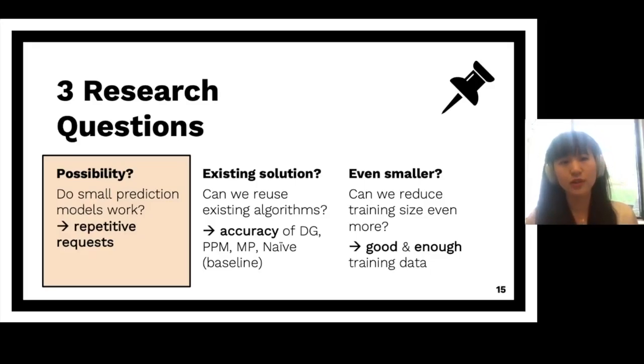The first question is, of course, do small prediction models even work? Because previously the prediction models are built on top of the data collected for like several months or even an entire year. But now with very small data set that spends only 24 hours, we don't even know if we can predict anything using such a small data set. So the first question aims to answer if there are any repetitive requests, which are the prerequisite for any history-based prefetching techniques, because they can only predict the requests that appeared in the past.